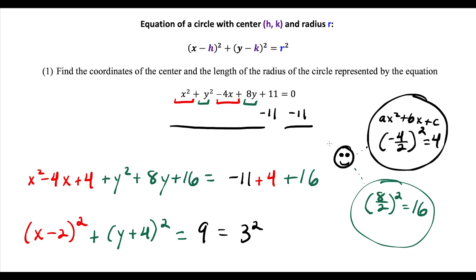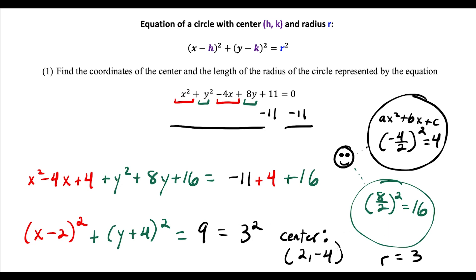Finding the center and radius: the center is the point (2, -4). Remember, for center (h, k) the formula is x minus h squared plus y minus k squared, so we take the opposite of the numbers inside the parentheses. Opposite of minus 2 is positive 2, opposite of plus 4 is minus 4. The radius r equals 3, since 9 is 3 squared.